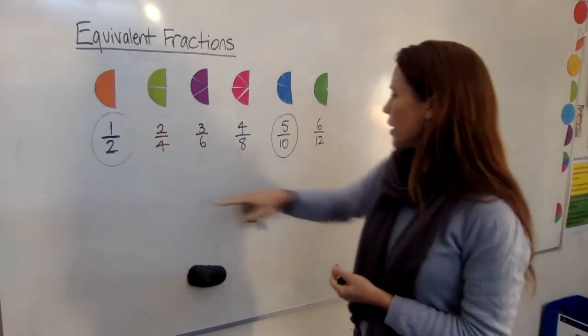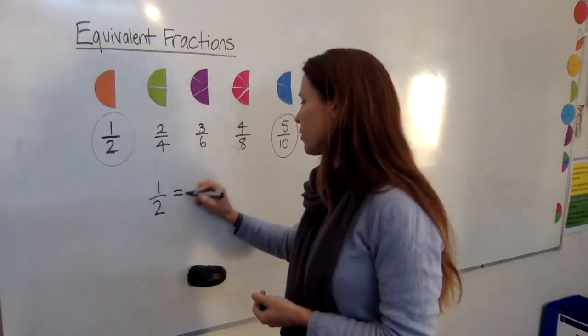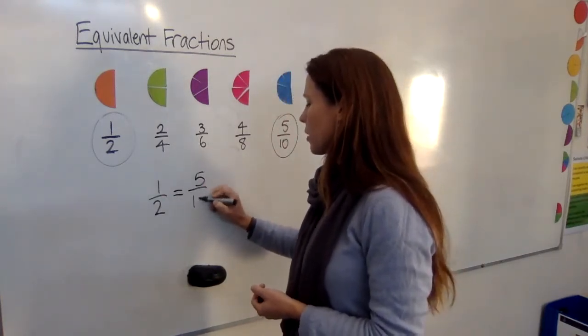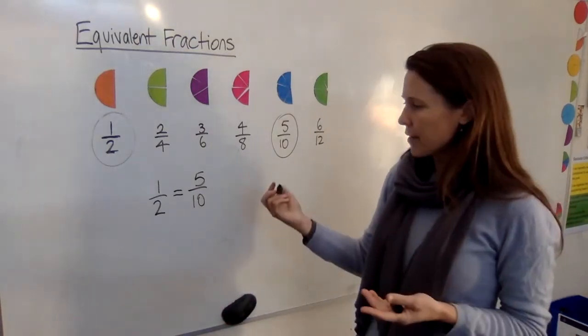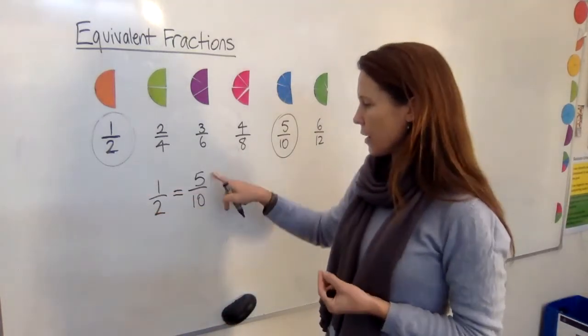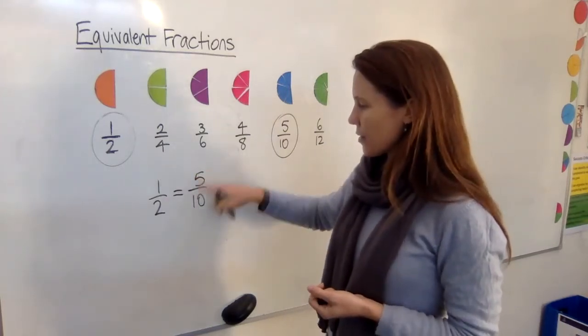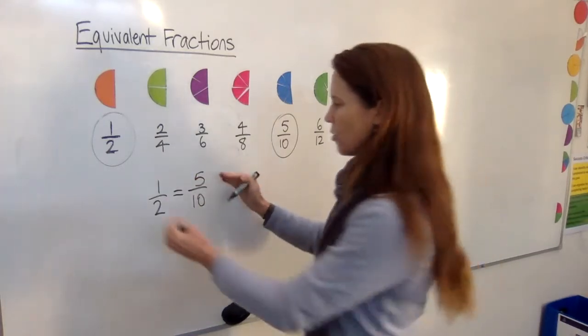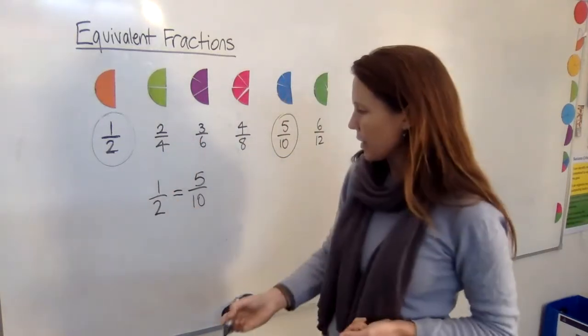Here we've got one half and we've got five tenths. Now if we look at them like this, one half equals five tenths. You can see a couple of things happening. You can either say this is to this as that is to that, or you can say this is to this as that is to that. I call them comparing the side partners or comparing the top and bottom partners. Let me explain.